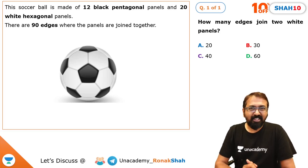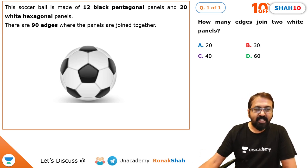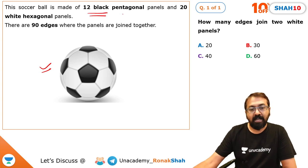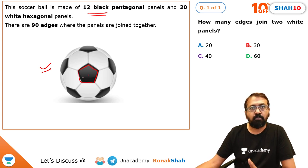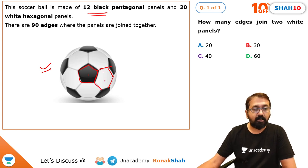Hi everyone. Here is a simple but tricky puzzle — let's try to solve this. This is a soccer ball which has 12 black pentagonal panels and 20 white hexagonal panels. You can see this is one hexagonal panel. In total there are 90 edges.